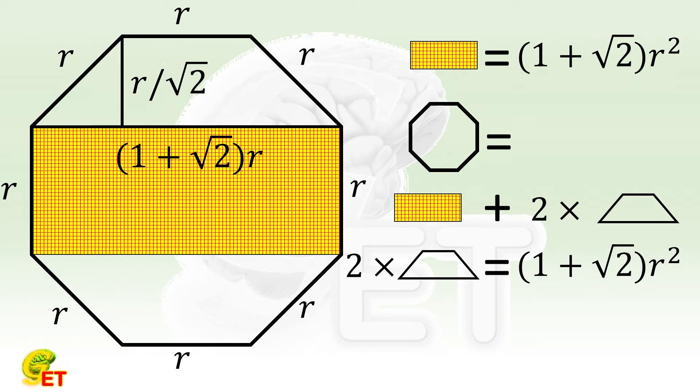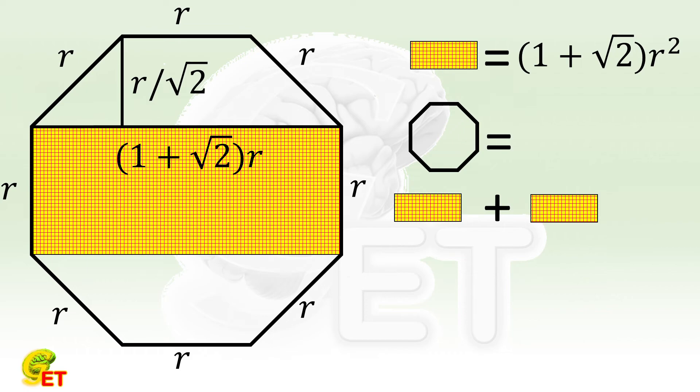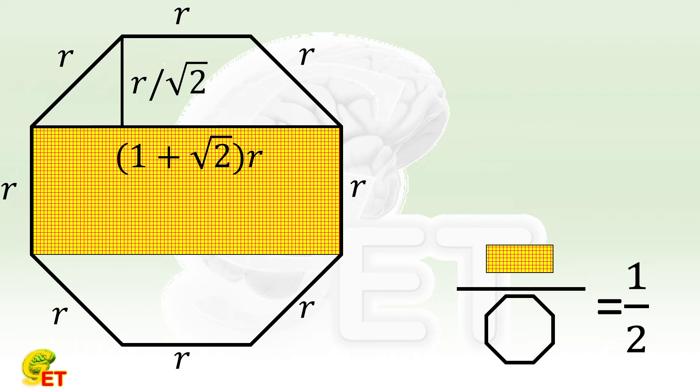The area of the octagon is therefore twice the area of the rectangle. So their ratio is one half. The result is the same.